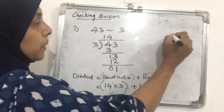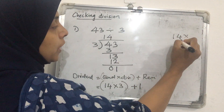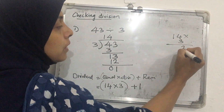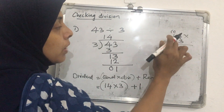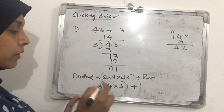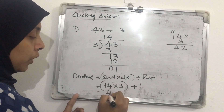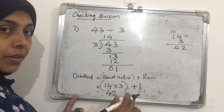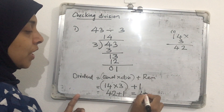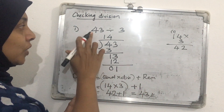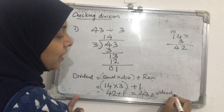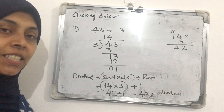We multiply 14 by 3: 3 fours are 12, carry 1; 1 into 3 is 3, plus 1 is 4 — so 14 into 3 is 42. Then 42 plus the remainder 1 is 43. That is the dividend. So we can confirm our division is correct.